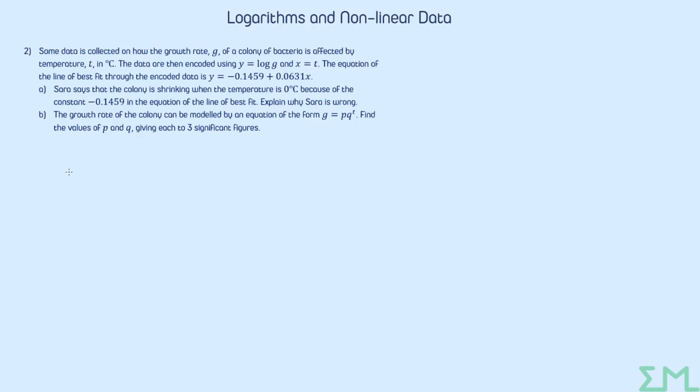Part A is saying Sarah says that the colony is shrinking when the temperature is zero and she thinks that because of this negative 0.1459. So she's looked at this and said, okay, so X equals T. When T is zero then X is zero, that term disappears. I get a negative 0.1459. That must mean the colony is shrinking because we're talking about growth rate here. Growth rate is negative. That means it's decreasing. We're told to explain why Sarah is wrong. So we know this clearly isn't correct.